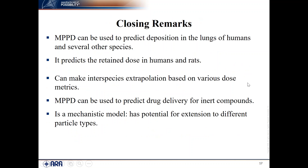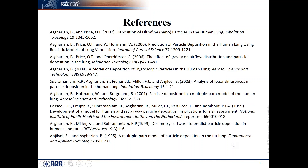In closing, a few highlights: MPPD can be used to predict deposition in the lungs of humans and several species, predicts dosimetric changes in humans and rats, and enables interspecies extrapolation based on various dose metrics. It has been used for drug delivery. Most importantly, it is a mechanistic model — that is what sets it apart from many other models — and it has potential for extension to different types of particles. References are listed for those interested in the theory behind the model.